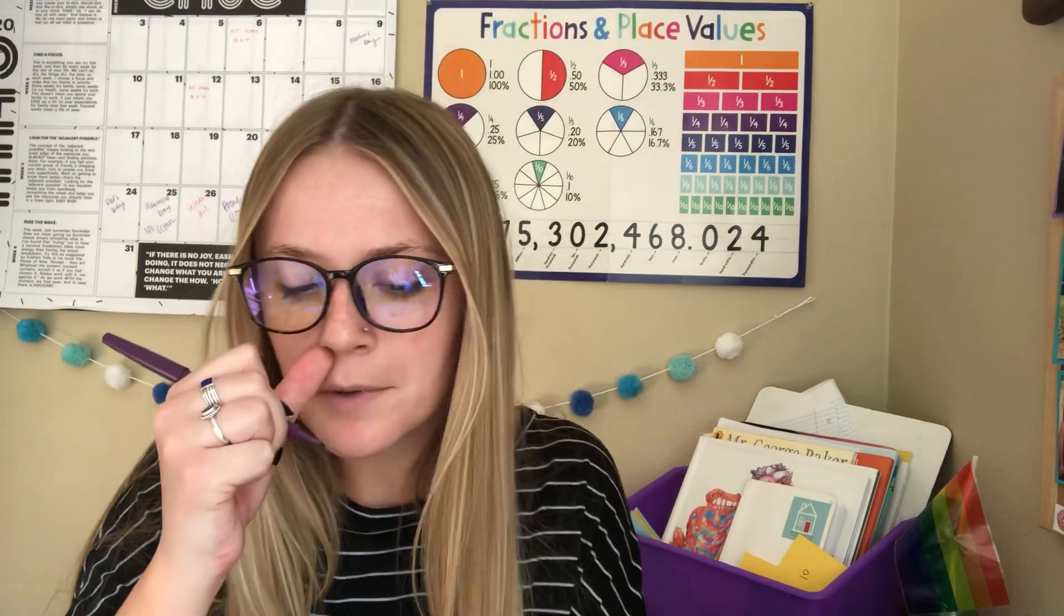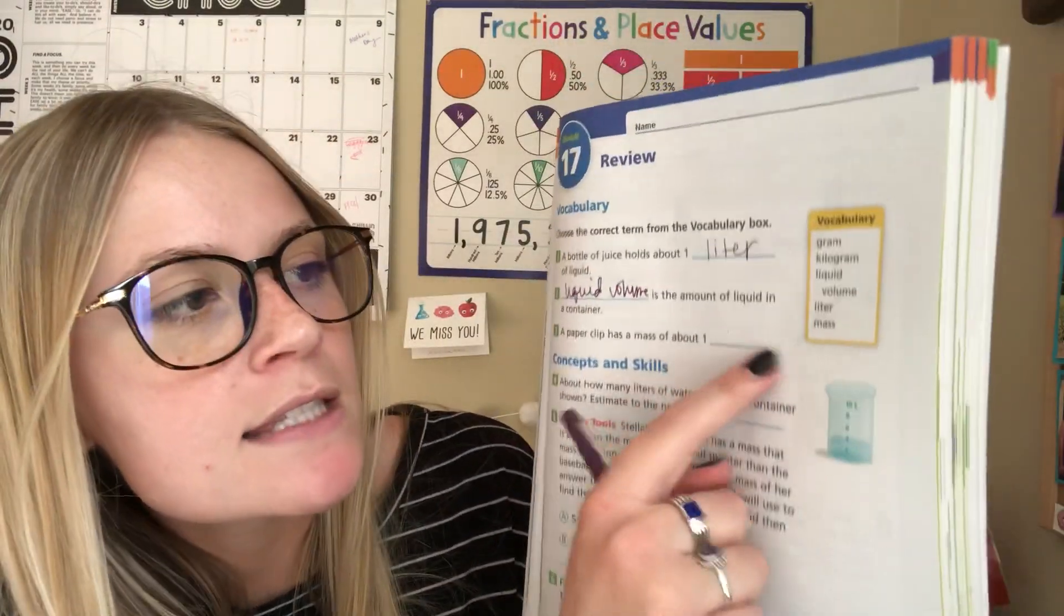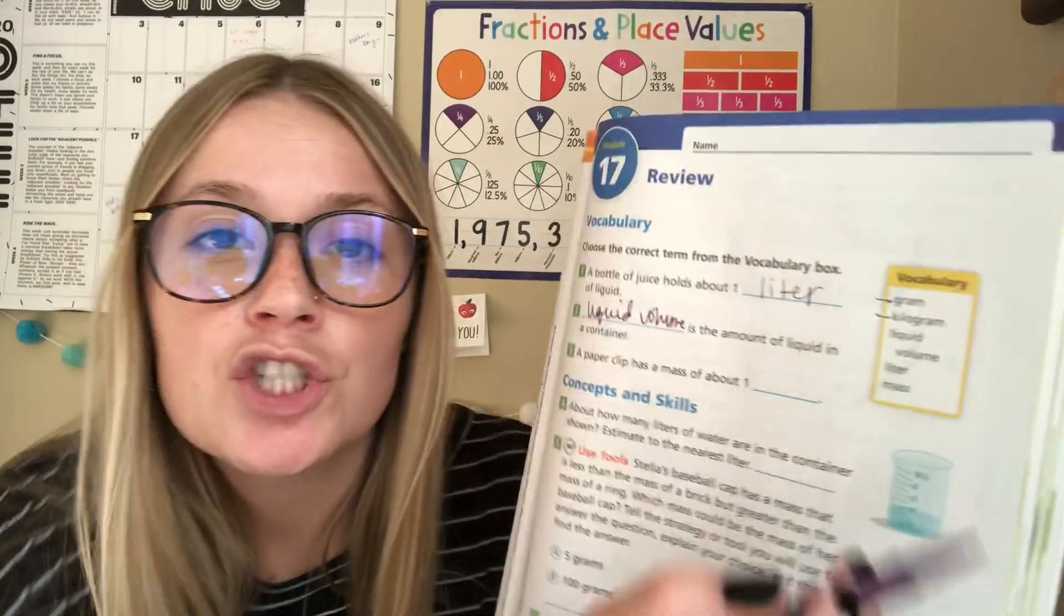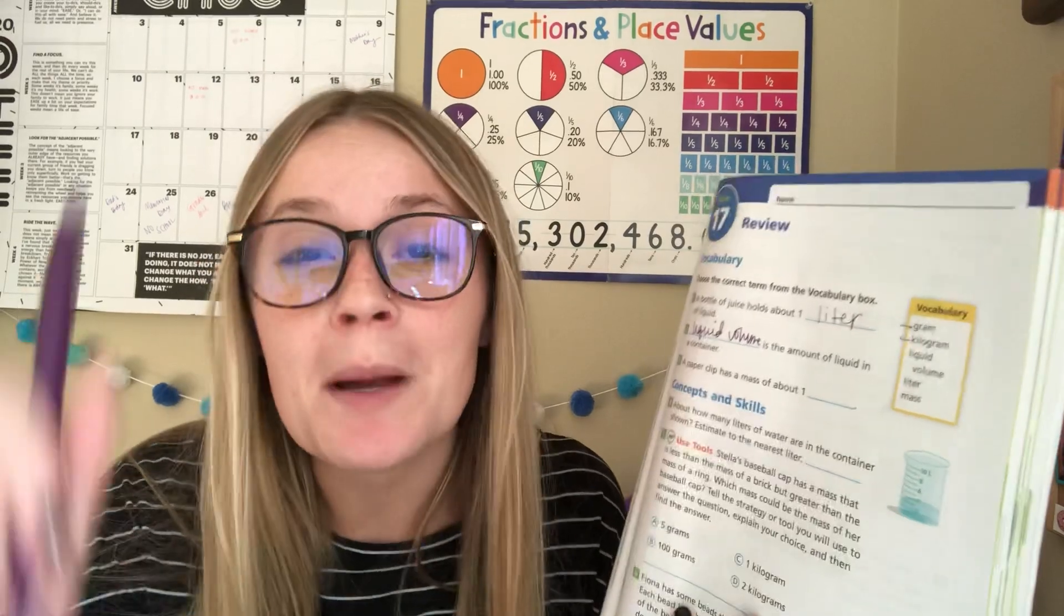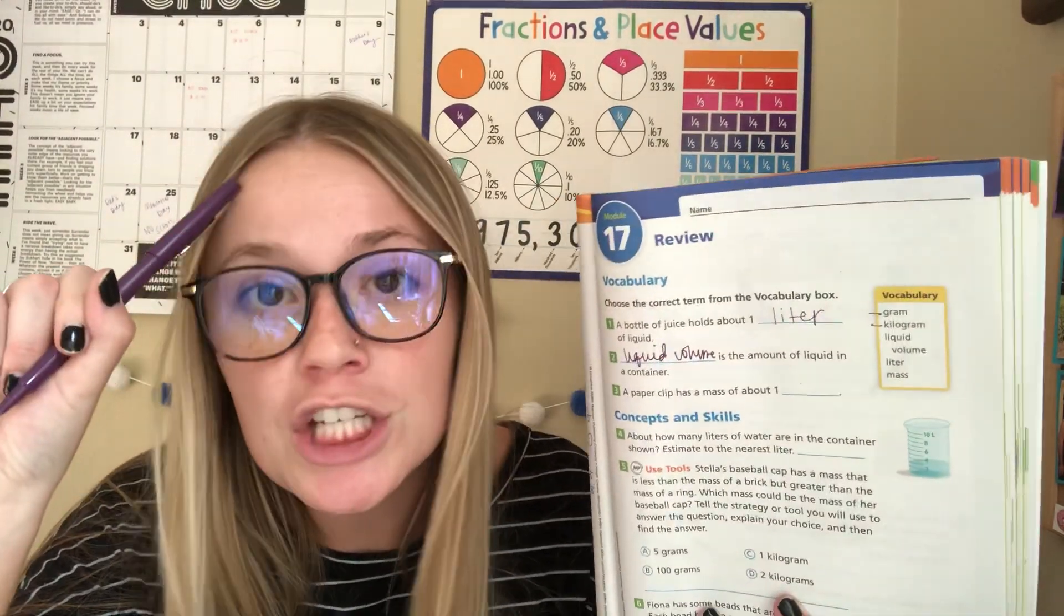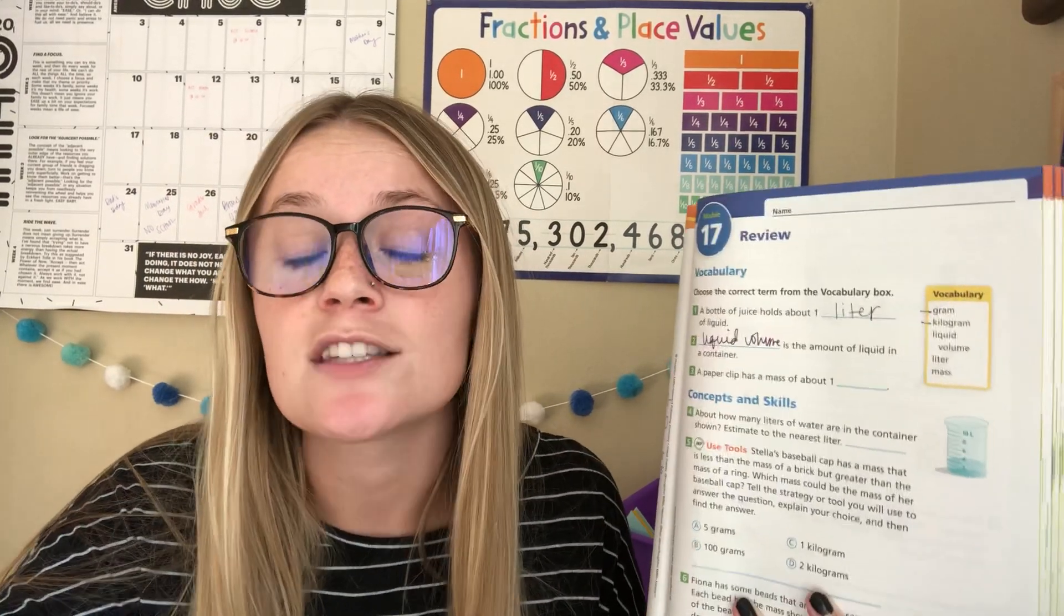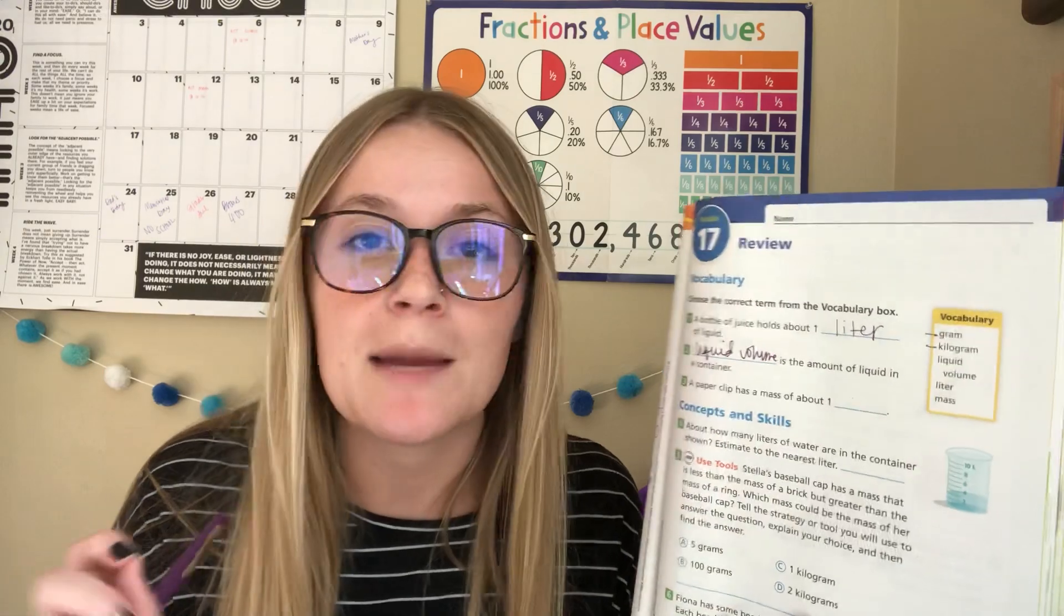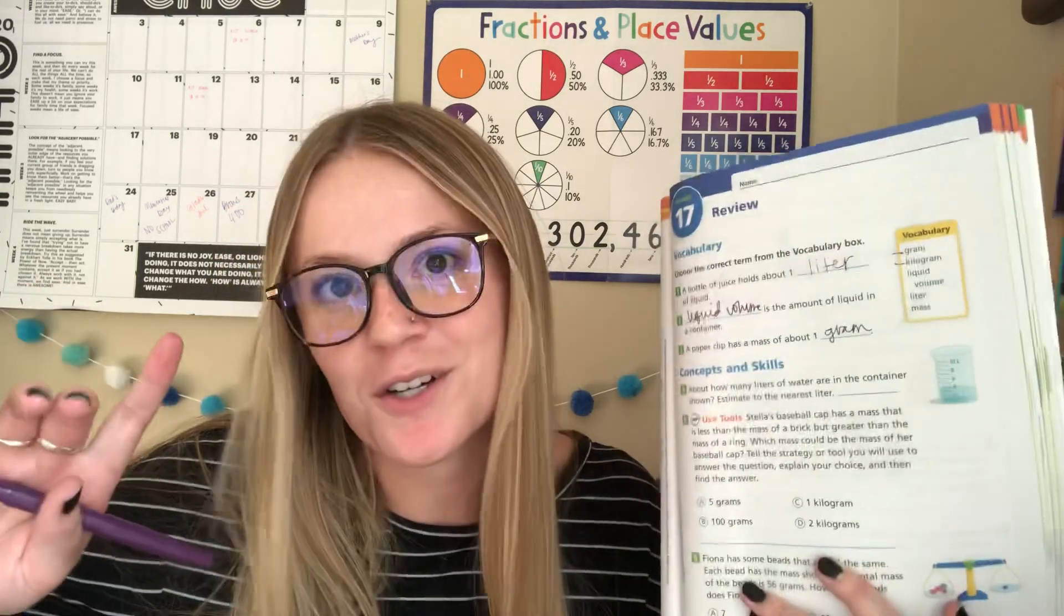Number three says a paper clip has a mass of about. So we know it's not going to be mass because that's in the sentence. Not going to be liter, not going to be liquid volume. So we have two options, two units of measuring mass, gram and kilogram. Which one are we going to use? Do you remember our benchmarks that we talked about during lesson two? We know that our benchmarks, a kilogram is about the weight of a textbook. And so when we think of a kilogram, a textbook weighs kind of a lot. And then a paper clip is so tiny, it will weigh one gram. So those are our benchmarks or like I like to call them anchors.